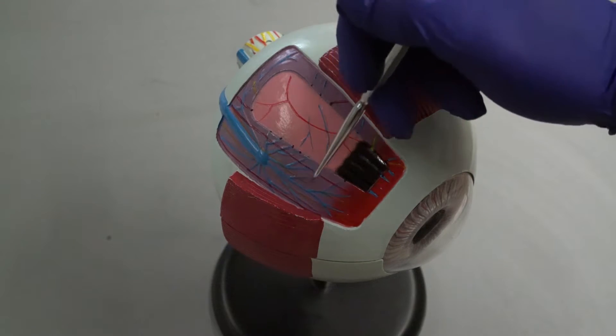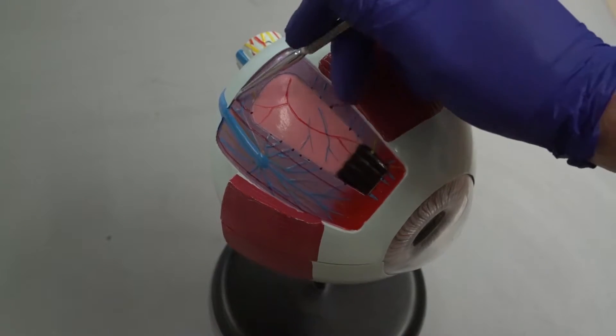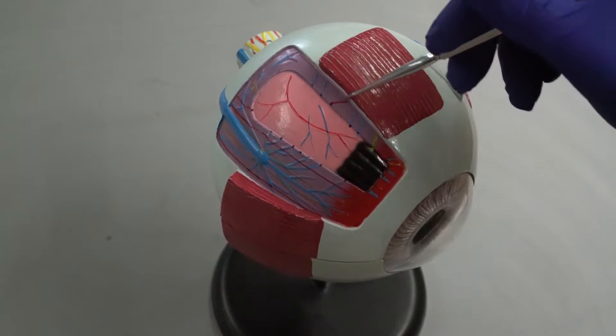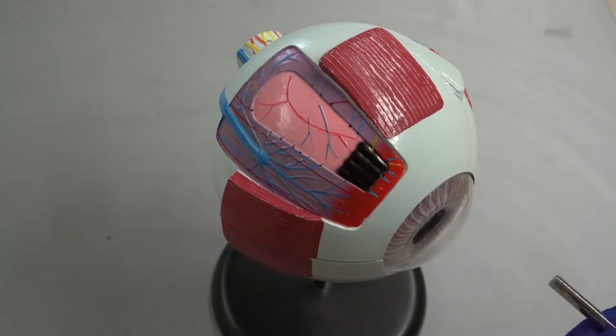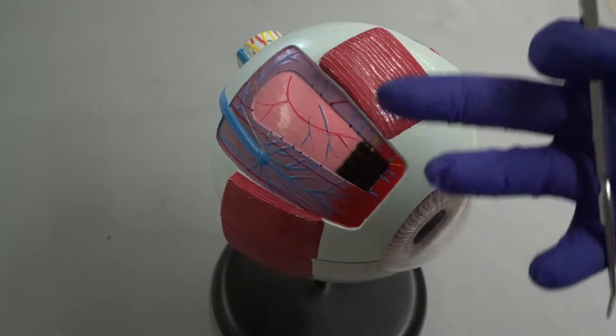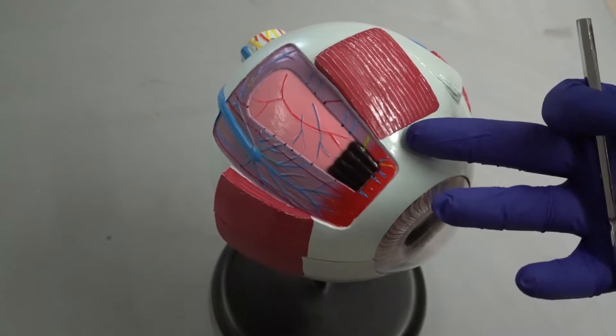Deeper to that is your choroid, which is illustrated purple here, and this has tons of blood vessels in it. It's really helping feed a lot of the cells in your eye. It also has a lot of melanin in it, and it helps absorb some of the light scatter, so you don't overexpose any of the images on your retina.